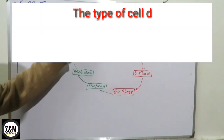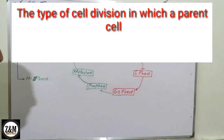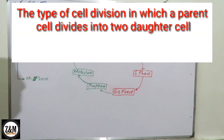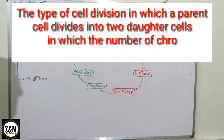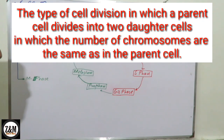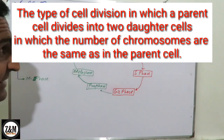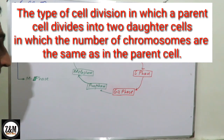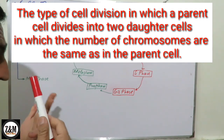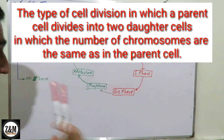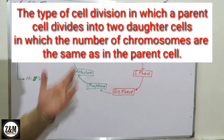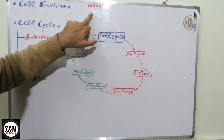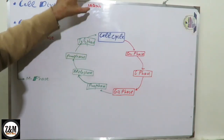The type of cell division called mitosis is one in which a parent cell divides into two daughter cells, and the number of chromosomes in the daughter cells is the same as in the parent cells.